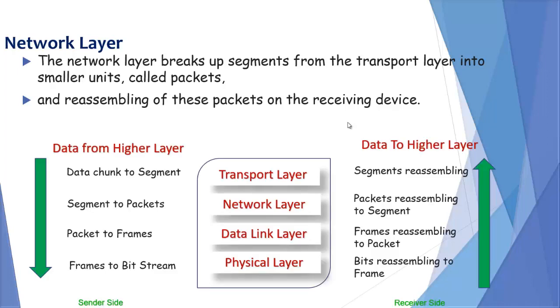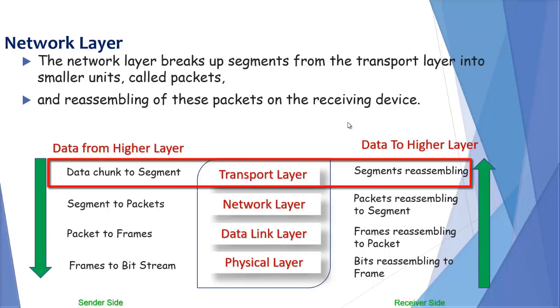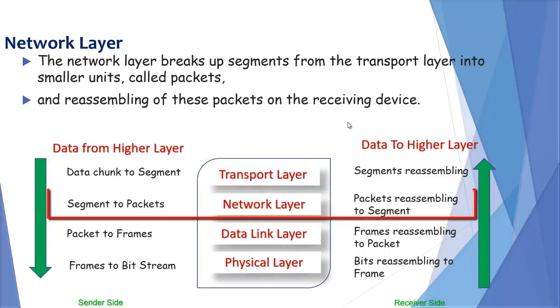Let's take help of graphics. Here you can see a transport layer data chunk is converted to segments, and at network layer these segments are converted to packets.